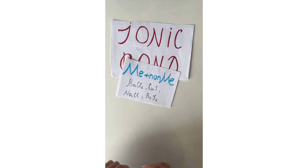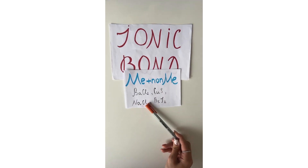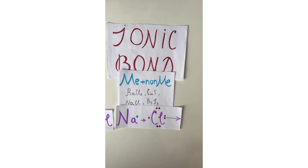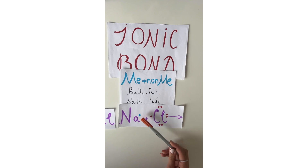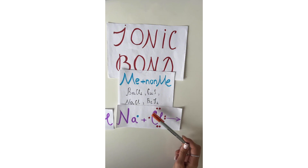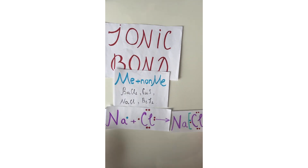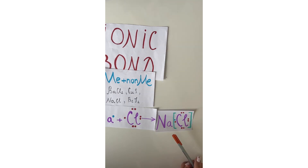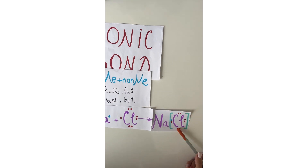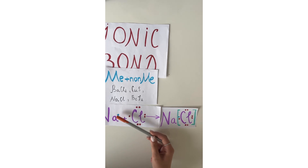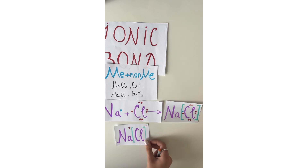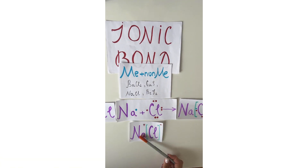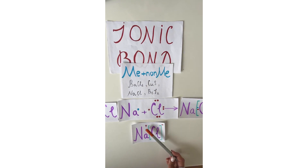An ionic bond is a bond between a metal and a non-metal. For example, copper is metal and fluorine is non-metal; sodium is metal and chlorine is non-metal. Take sodium chloride: sodium has one electron in its outer level, and chlorine has seven electrons. We know that an ionic bond is formed when the most electronegative atom takes electrons from the least electronegative atom. Fluorine took an electron from sodium and becomes a negative charge of minus one, and sodium lost an electron and becomes a positive charge of plus one.